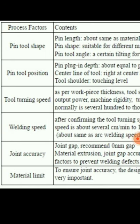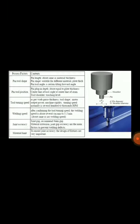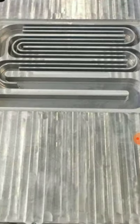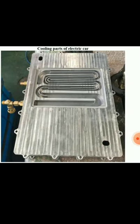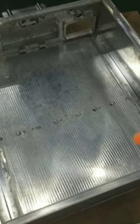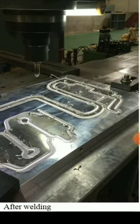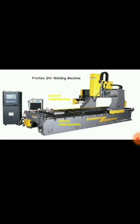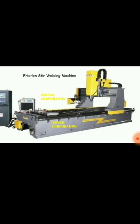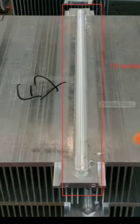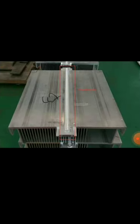These are some pin tools and pin tool positions — these are the parameters which affect the friction stir welding machine. Some of the components welded include aluminum parts such as the cooling plate of an electric car, the battery box, and heat sink or heating plate aluminum components.